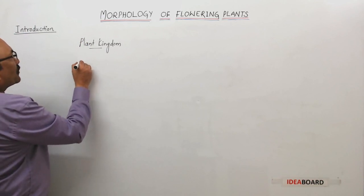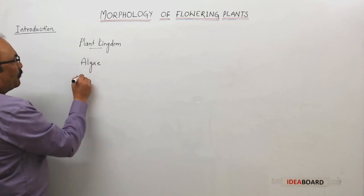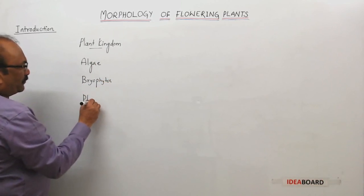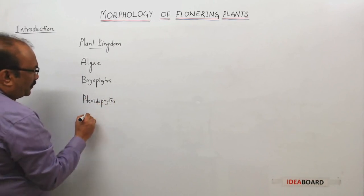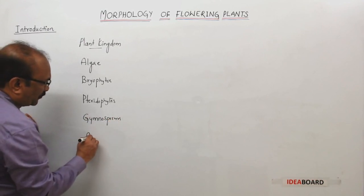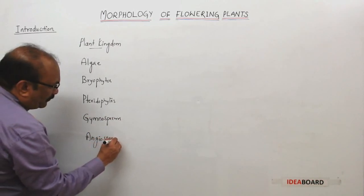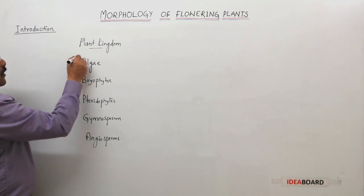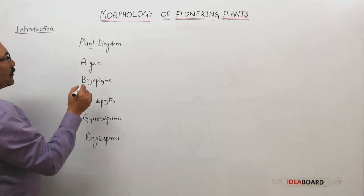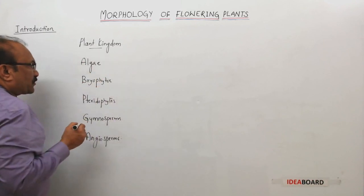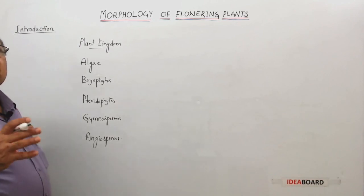These different groups contain algae, bryophytes, pteridophytes, gymnosperms, and angiosperms. Among these five groups of plants, the primitive plants are algae, and they are aquatic plants.